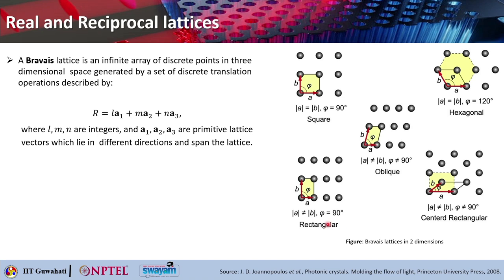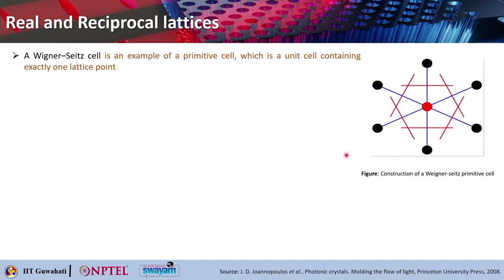Here is an example of a Bravais lattice in two dimensions — it is easy to visualize. We can see square, hexagonal, rectangular, oblique and centered rectangular lattices. What is important is the concept of the Wigner-Seitz cell. How do you construct a Wigner-Seitz primitive cell? It is a unit cell containing exactly one lattice point.